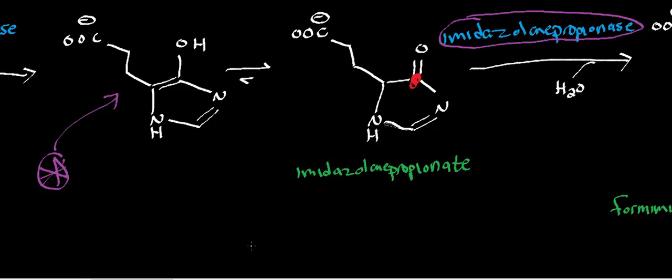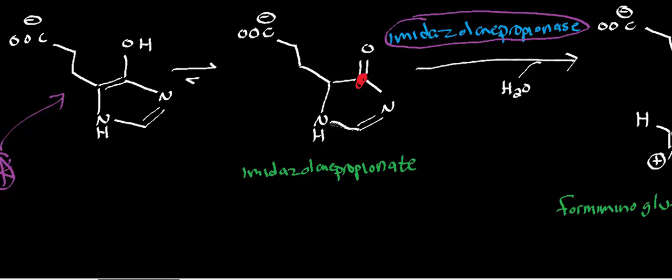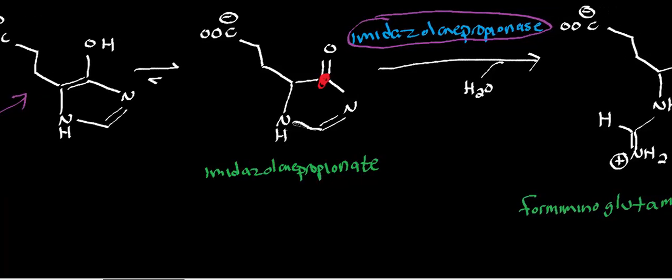One of the handy things about having the enol imidazolin propionate tautomerize into the carbonyl version is because, remember, with enols, you can't do a nucleophilic acyl substitution on those. It's impossible. It requires a carbonyl in order to do a nucleophilic acyl substitution. So it's pretty handy that the equilibrium favors the carbonyl version of imidazolin propionate.